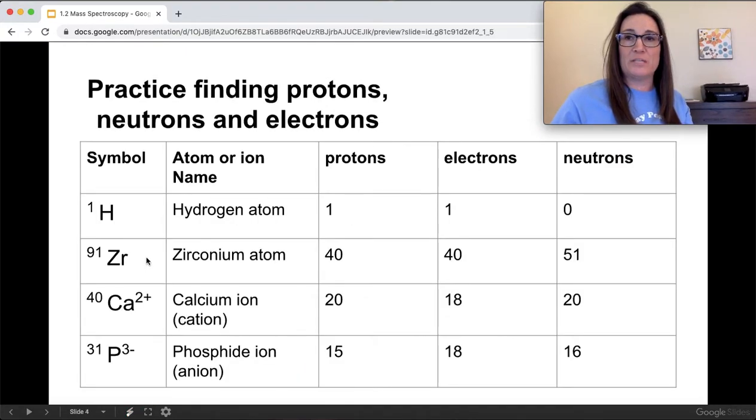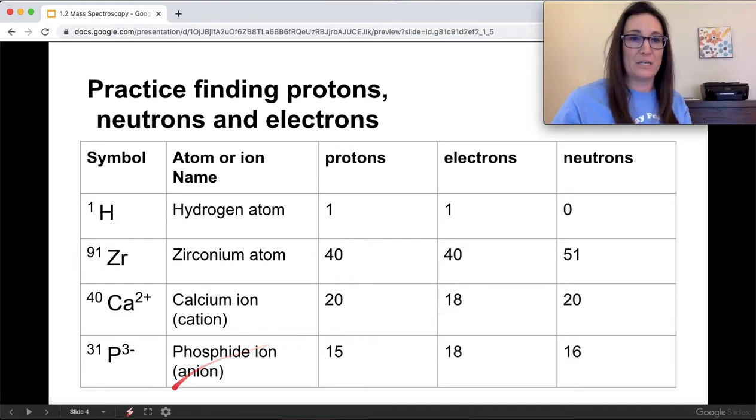This would be a table that you should be able to fill in pretty quickly. Remember if it's neutral, the protons and electrons are the same. 51 is added to 40 to give us the mass number of 91, one of the isotopes of zirconium. If you have an ion, remember if it's positive, the electron count goes down. And if it's negative, the electron count goes up by that number in the superscript. Remember, protons do not change and only electrons change for your ions.